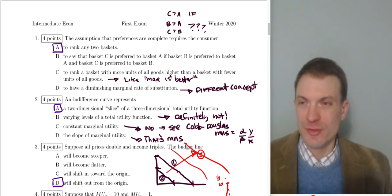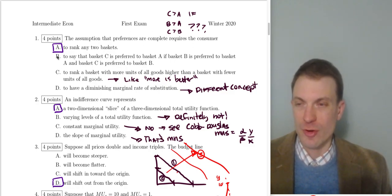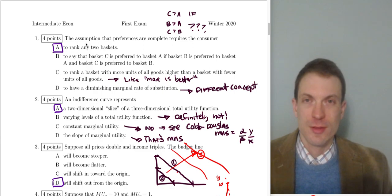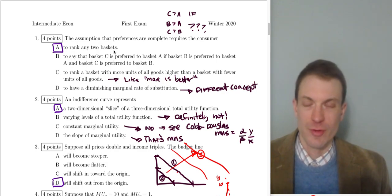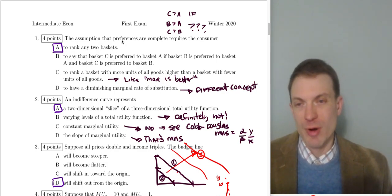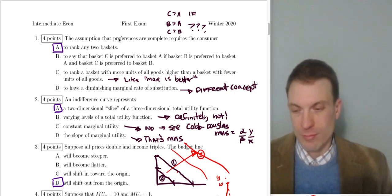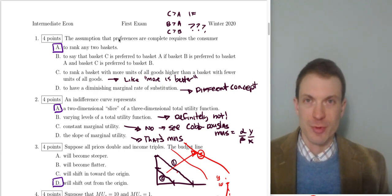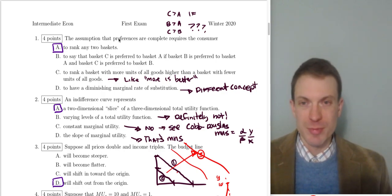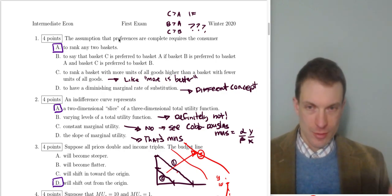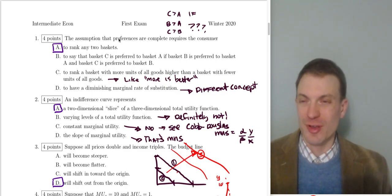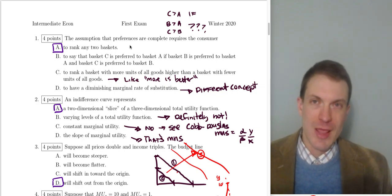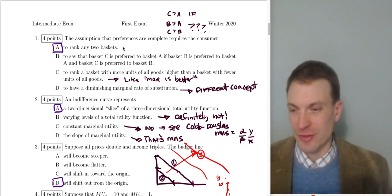Hello and welcome everyone. In this video I'm going to do a walkthrough of the solution to our first exam. Question one: the assumption that preferences are complete requires that the consumer is able to rank any two baskets. That's our definition of completeness — preferences are complete if you're able to make a comparison between any possible baskets or bundles of goods. You'd violate completeness if you throw up your hands and say you don't know how to compare two bundles.